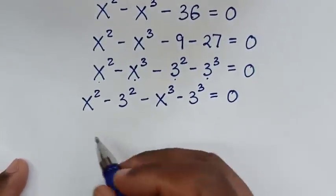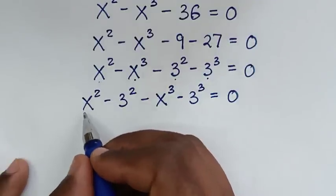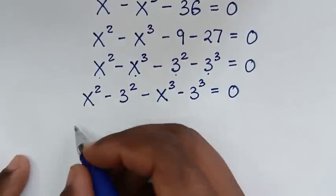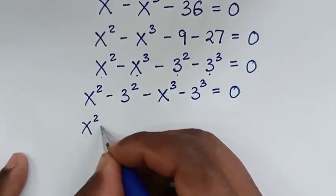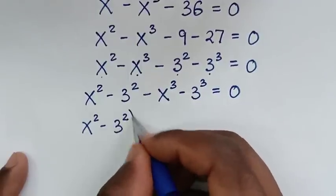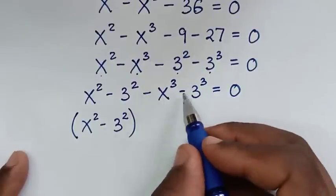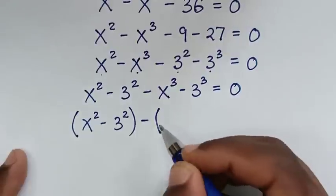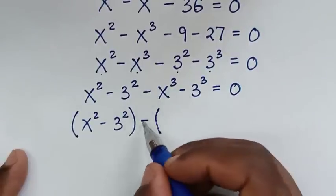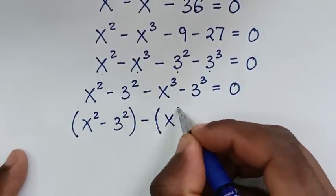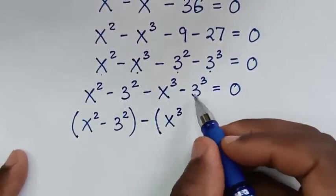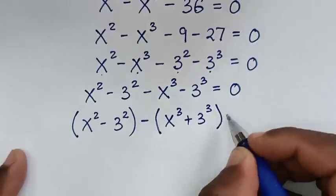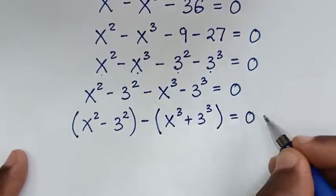In the next step we will place these together inside brackets. So it will be (x squared minus 3 squared) in a bracket, and here negative is common so we take negative outside the bracket, giving negative (x cubed minus 3 cubed) inside the bracket, is equal to 0.